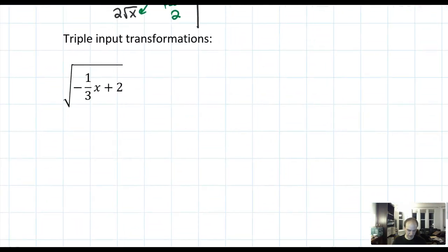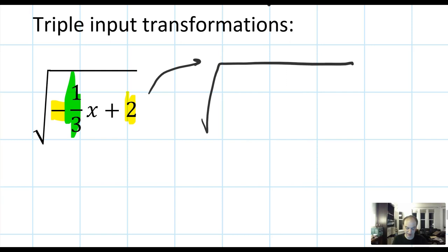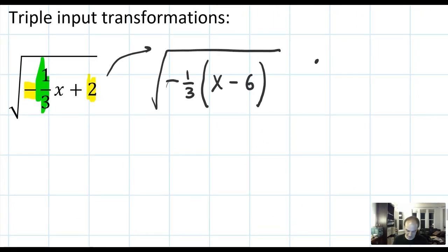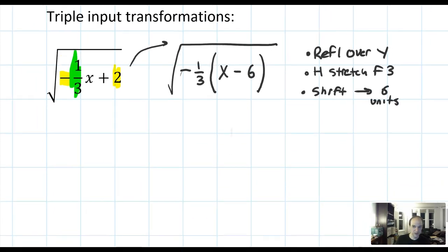We'll end with two examples of triple input transformations. First: square root of (-1/3 x + 2). I'll factor out a negative 1/3 to get: square root of negative 1/3 times (x - 6). Three things happen: one, reflection over y; two, horizontal stretch by a factor of 3; three, shift right 6 units. I'm going to carry out that sequence — reflect first, then stretch, then shift.